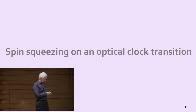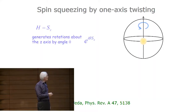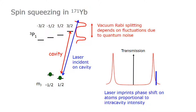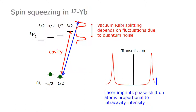Now to spin squeezing. Norman gave a wonderful talk, so much of this will be familiar. The simplest Hamiltonian that creates spin squeezing is the one-axis twisting Hamiltonian — as Norm said, the Z-dependent rotation about the Z-axis creates spin squeezed states. This goes back to Kitagawa and Ueda in 1993. We implement this Hamiltonian by placing atoms in a cavity with strong coupling between atoms and the cavity, leading to this characteristic vacuum Rabi splitting. We park the cavity on a resonance and when you put enough atoms in, you get this vacuum Rabi splitting by the ensemble.